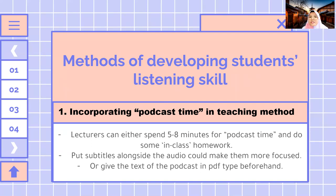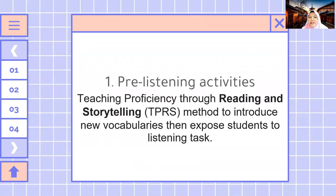To help students listen more efficiently, lecturers can put subtitles alongside the audio or give the text beforehand, either as soft copy or hard copy. There are two activity types: prior listening activities and post-listening activities. For prior listening, lecturers can introduce new vocabularies students will find in the podcast, then expose students to the listening task. This prepares students mentally — they know today's topic and theme so they won't be caught off guard.